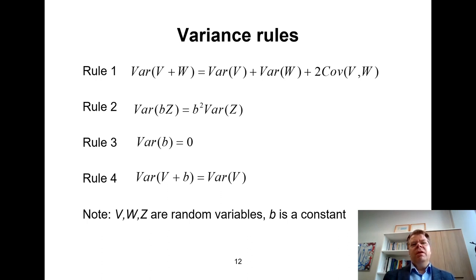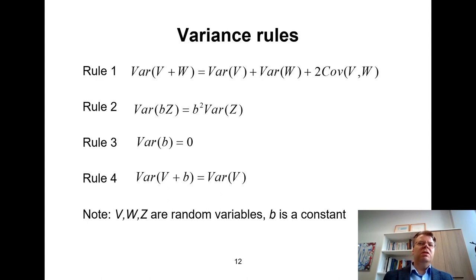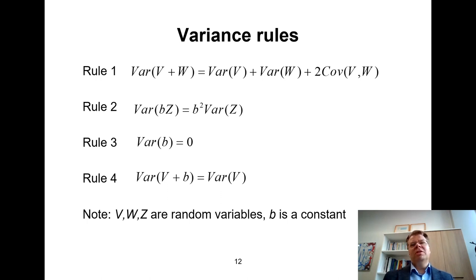Rule number four is that if you have some random variable V and add some constant B, this would shift the distribution of V to the left or right by B, but it doesn't change the variance at all. So variance of V plus constant B is the same as variance of V. Again, these four rules are probably quite obvious when presented like this, but please make sure you understand them so we can utilize them later when proving properties of estimators. In particular, rule number one and rule number two are quite fundamental results that often raise curious questions as we proceed.